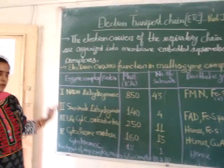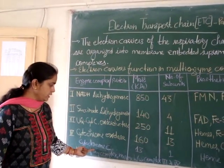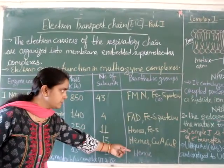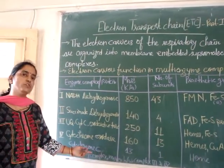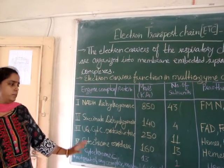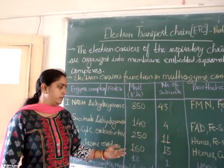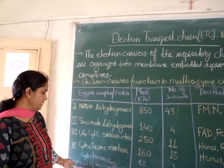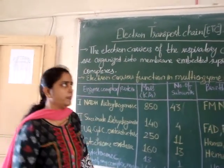Apart from these four complexes, one more electron carrier, cytochrome C, is present, in which heme acts as a prosthetic group. Cytochrome C is not part of any complex — it moves between Complex III and Complex IV, as mentioned in the previous video. It remains as a soluble protein.